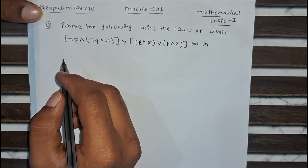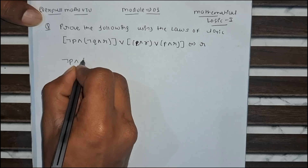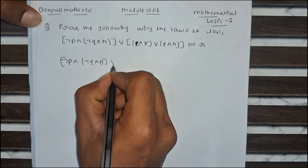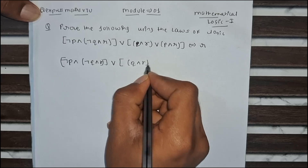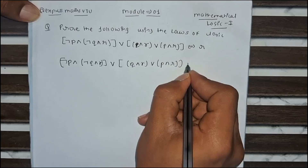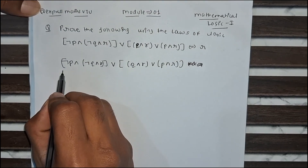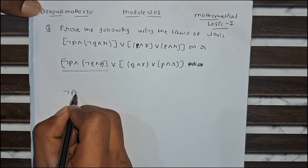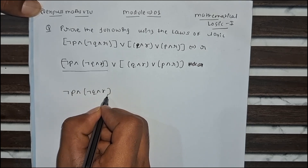First we take the LHS. So what is our LHS? It is: negation P conjunction negation Q conjunction R, disjunction Q conjunction R, disjunction negation P conjunction R, which is equivalent to R. We will do this problem part by part. So first we take this part — negation P conjunction negation Q conjunction R — this is the first part.